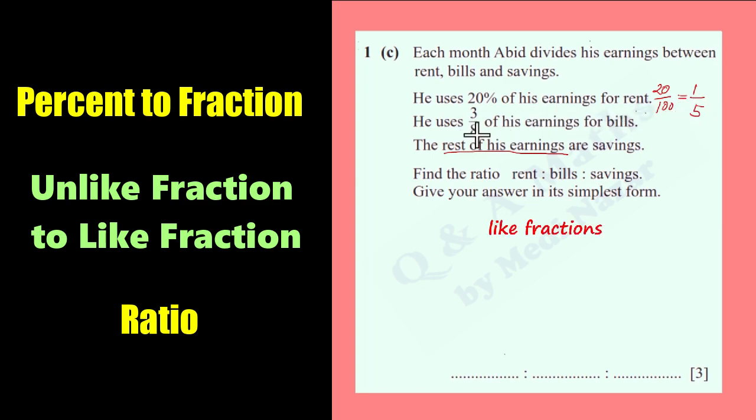We still have to write this as like fractions to compute for the rest of the earnings. So we have 1 over 5 here and 3 over 8. We have to look for the equivalent fraction for this and for this wherein their denominators are the same. The least common denominator that we can have here is 40.